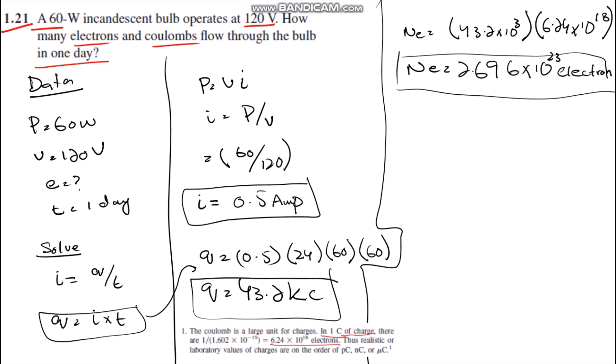The data is power, which is the rated power of the bulb, and the voltage 120 volts. We have to find electrons. The time is one day. We know the current is the flow of charge with respect to time, then we get Q equals I multiplied by T.